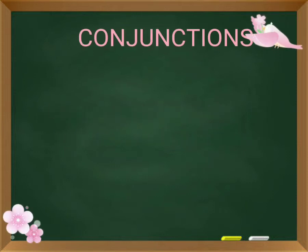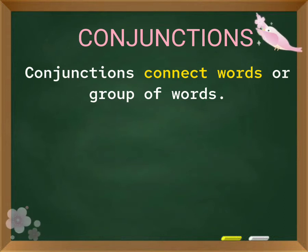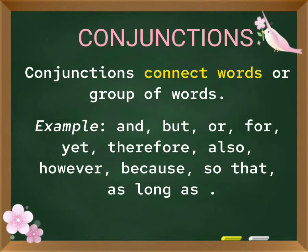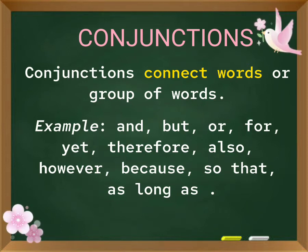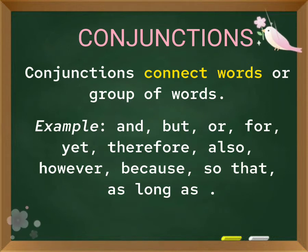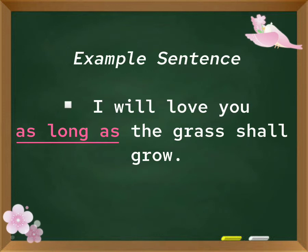Conjunctions. Conjunctions connect words or group of words. Examples: and, but, or, for, yet, therefore, also, however, because, so that, as long as. Example sentence: I will love you as long as the grass shall grow.